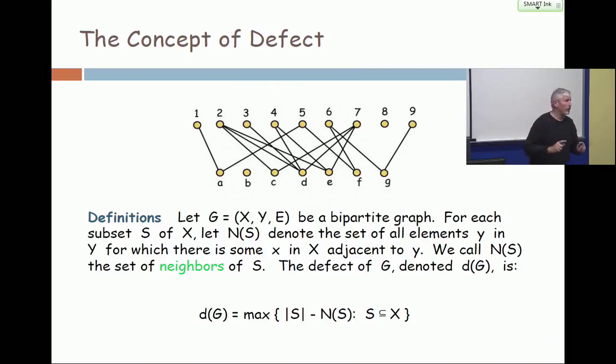It could be worse than that. It could be worse because there may not be a matching of size 50 among the 75 candidates and those 50 jobs. But the important thing is that when the neighbors are smaller than the size of S, when that defect is positive, this means unemployment. This is a bound on the matching.